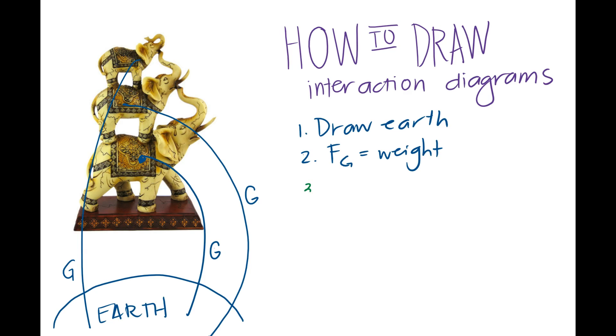There are four types of interactions that are happening that we talked about in class. The first one we'll call normal and that's we mark that with a big N capital N and that's pushing. The next one is tension, we mark that with a T and that's anything that's pulling on each other.